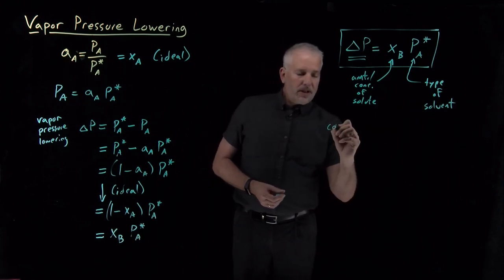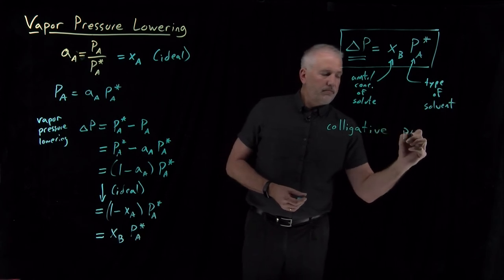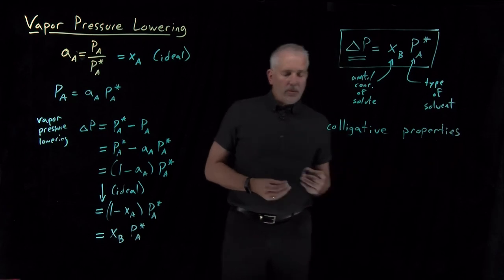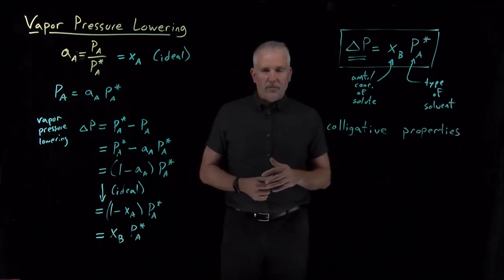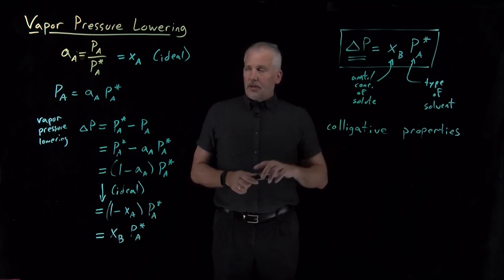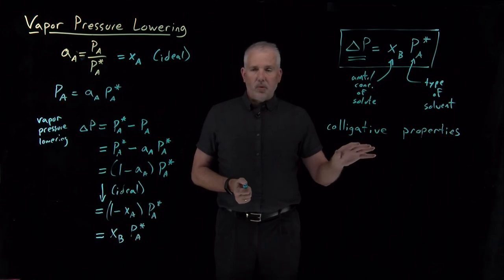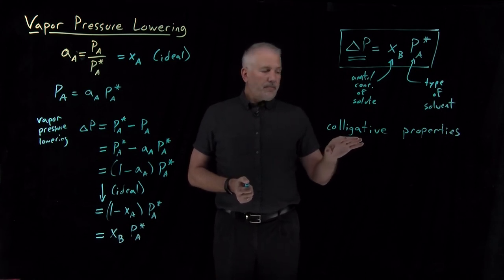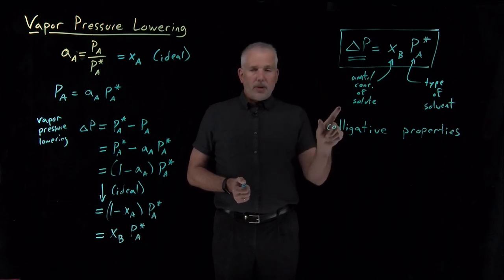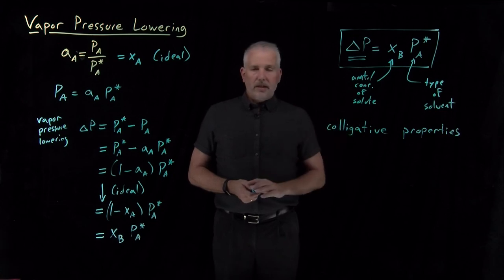Properties that have this type of behavior we're going to call colligative properties, and we'll see a number of examples — many of which you may have heard of before: freezing point depression, boiling point elevation, osmotic pressure, and vapor pressure lowering. We'll talk about those other three in upcoming videos, but they're all examples of colligative properties where only the amount of solute dissolved matters, not the chemical identity of the solute.